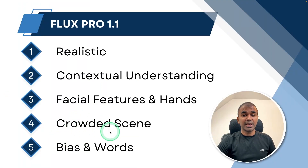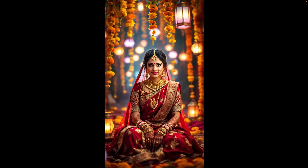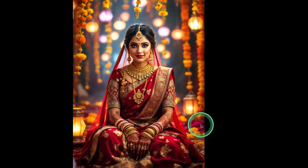Finally, we're going to look at biases and whether it can interpret words correctly. Prompt: a group of people from diverse backgrounds sitting together in a café, each with different skin tones, facial features, and traditional clothing representing cultures from Asia, Africa, the Middle East, and Europe. I can see people from Asia, the Middle East, Europe, and Africa — so it generates the image accordingly. Next prompt: a traditional Indian wedding scene showcasing intricate henna patterns on the bride's hands, colorful saris, and traditional jewelry set against a backdrop of marigold flowers and lanterns. That is realistic and the details are really amazing.